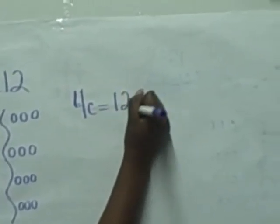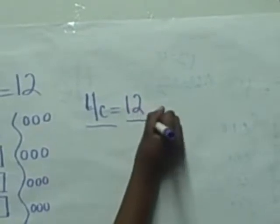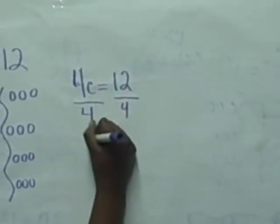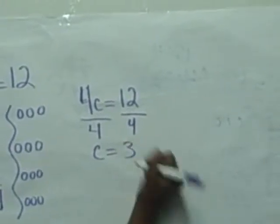And 4C equals 12, you are going to divide that by 4. When she divides that by 4 she is going to say C equals 3.